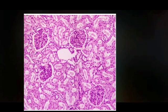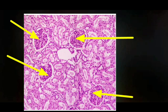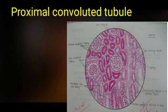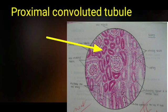This is an H&E stained picture of the renal cortex showing several renal corpuscles. The proximal convoluted tubule is seen mostly in the cortex. These proximal convoluted tubules are lined by simple cuboidal cells which show tall microvilli at their apex, providing a brush-border appearance. The lumen is very narrow, and the nuclei are rounded and centrally placed. The cytoplasm is darkly stained with eosin, and the diameter of the proximal convoluted tubule is about 60 micrometers.